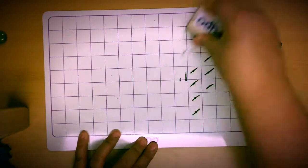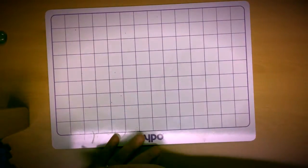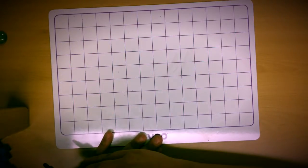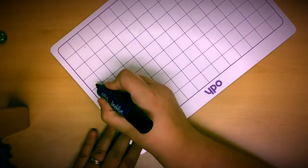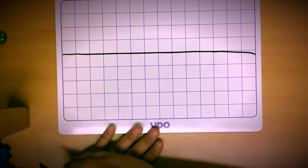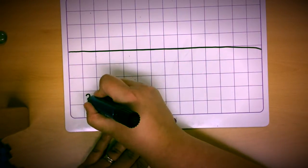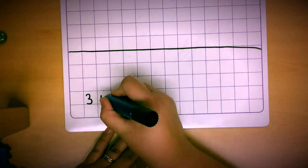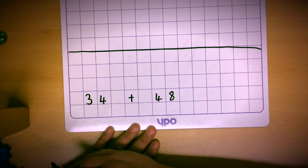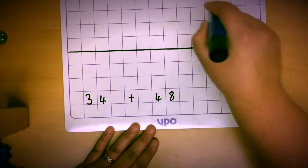Once the children become more aware of the differences between the tens numbers and the ones numbers, they can begin by looking at using a method called an empty number line. This involves the children drawing an empty number line in their work. They will record their number sentence that they're going to add, so in this case it's 34 add 48, and instead of drawing sticks this time they're going to be doing little jumps, little hops across the top.